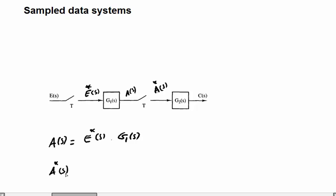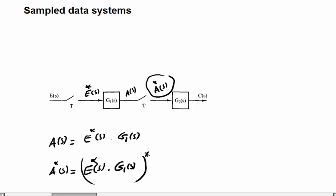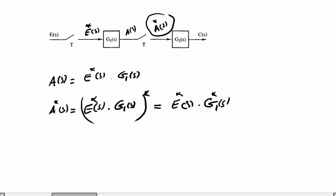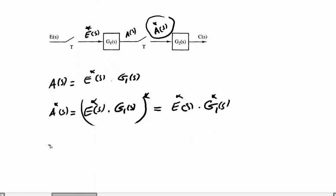If we take the sampling of this signal, E*(s) is already sampled, so there is no need to sample again. Therefore A*(s) will be equal to A*(s) times G2(s). Now if we take C*(s)...